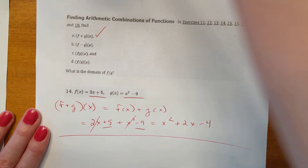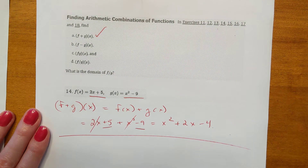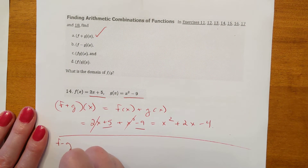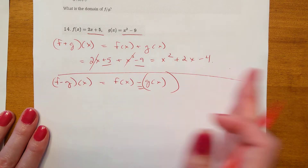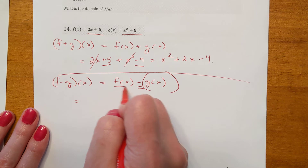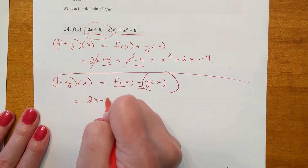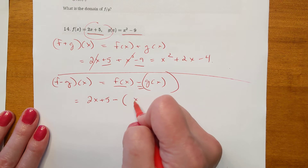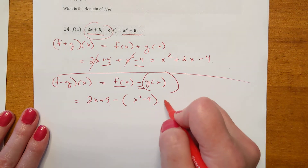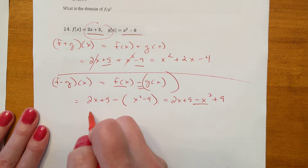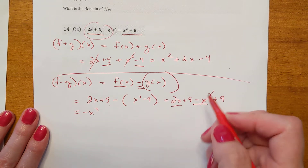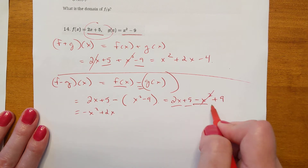Next, f minus g of x. This one can be tricky — it's the minus part. You've got to make sure you subtract the whole second function, so use parentheses. So f(x) was 2x plus 5, minus the quantity g(x) which is x squared minus 9. Distribute across the negative — that makes negative x squared plus 9. So you get negative x squared, then 2x, then 5 plus 9 equals 14.